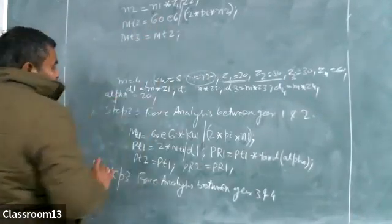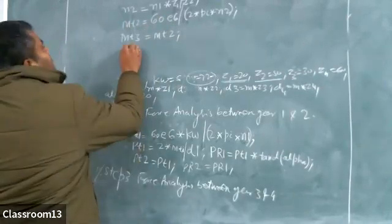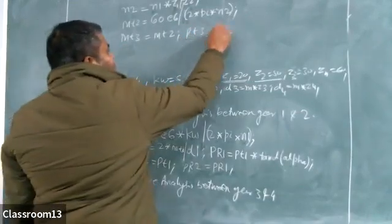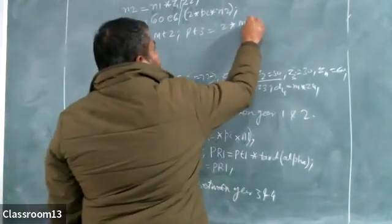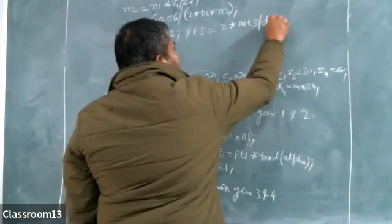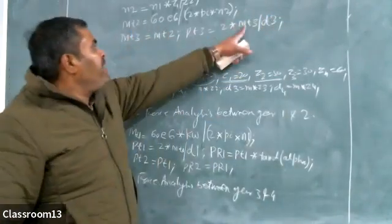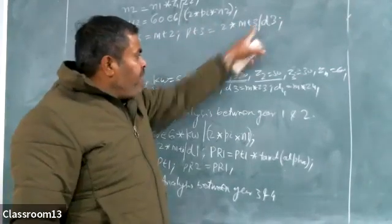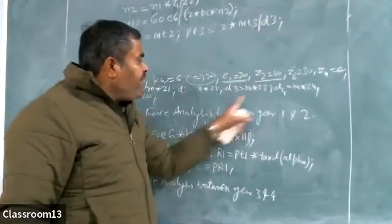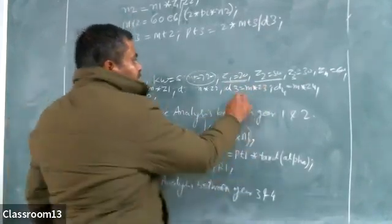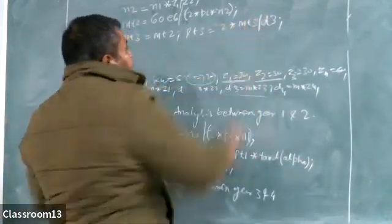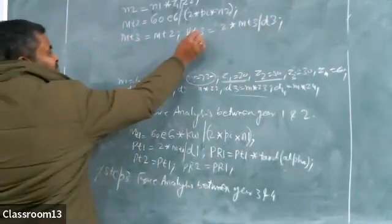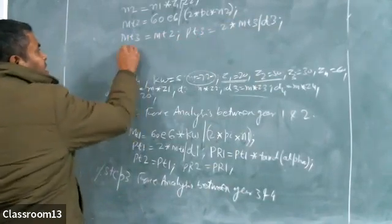Mt3 will be picked from Mt2. We have already calculated D3. So Pt3 will be calculated from Mt3 and D3. Every data is available; Pt3 will be calculated, no problem.